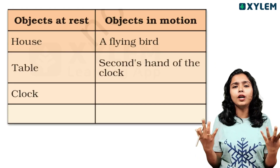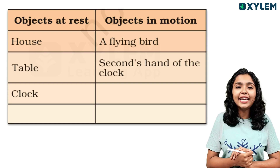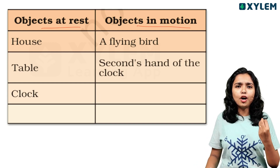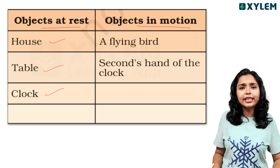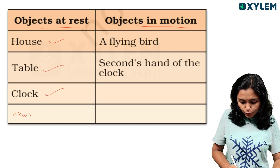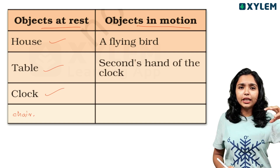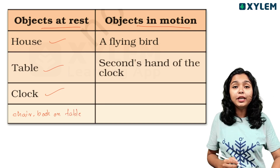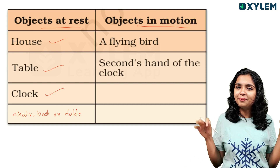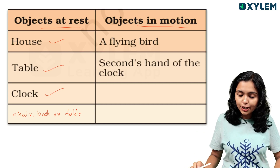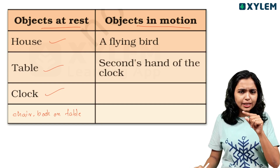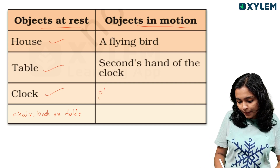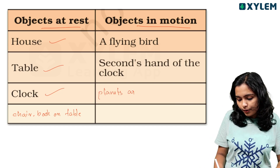So, look at a table — here's a tabular column. You can fill up this table. Look at how many columns we have: objects that are at rest, objects in motion. Objects at rest in the house could be a turban, a cloak, a table, or a chair. In motion, we have a flying bird and the second hand of a clock. You can see planets around the sun.